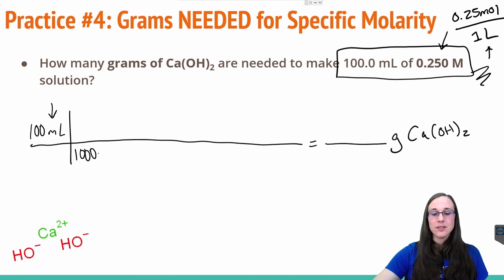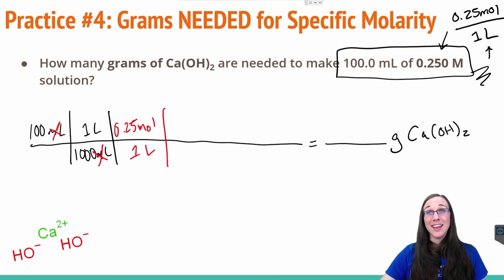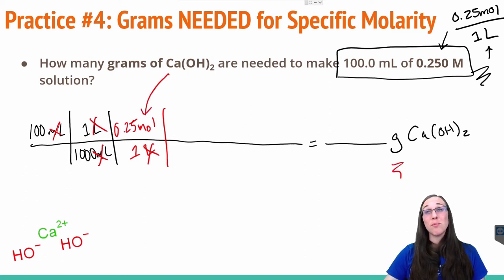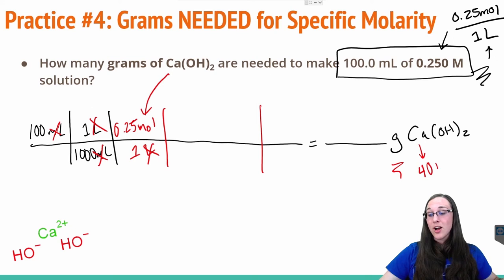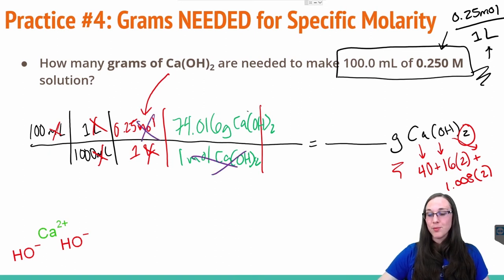There are 1000 milliliters in one liter. Now we have a liter unit on top and we can plug in our molarity conversion factor: 0.25 moles per one liter. Our liters now cancel and we're left with moles of calcium hydroxide. We still need grams, so we use molar mass. Each calcium atom weighs 40 grams, each oxygen weighs 16 with two of them, and each hydrogen weighs 1.008 with two of those — all within the parentheses. Our molar mass is 74.016 grams of calcium hydroxide per mole. Moles cancel and I'm left with grams of calcium hydroxide.